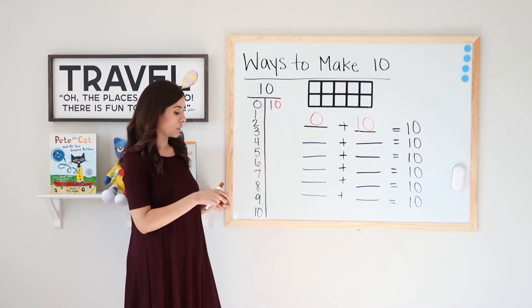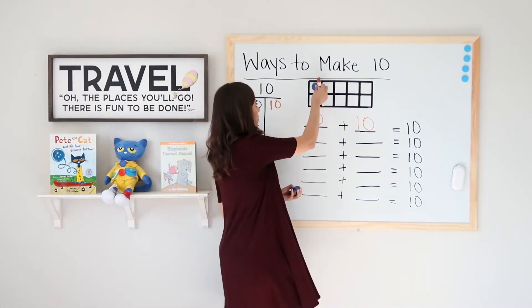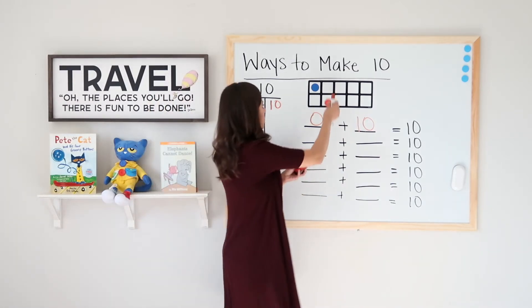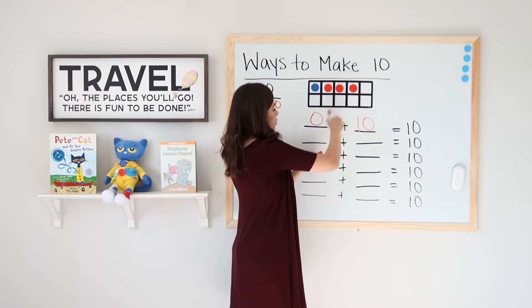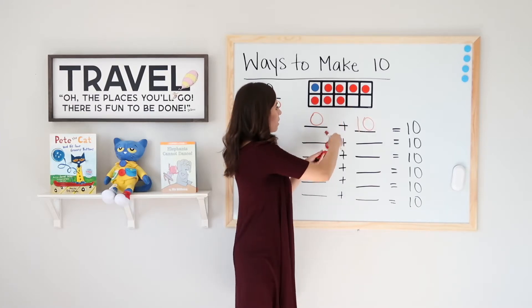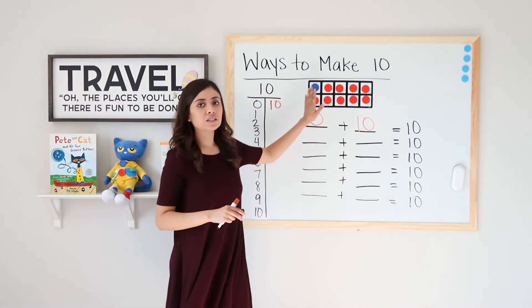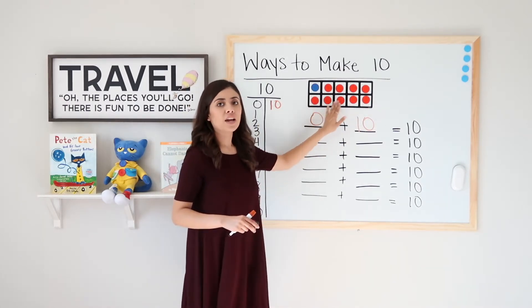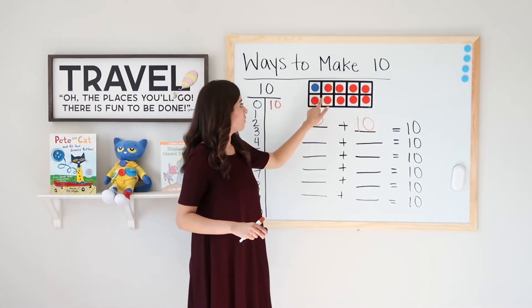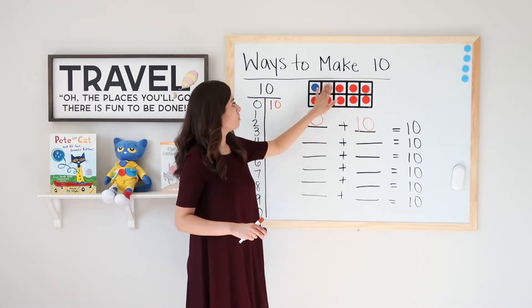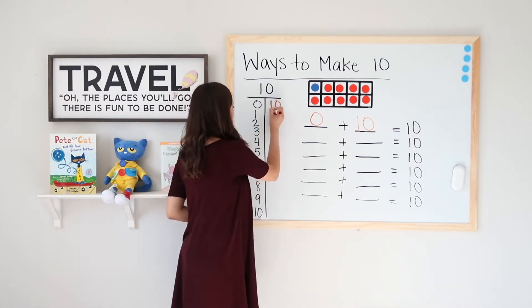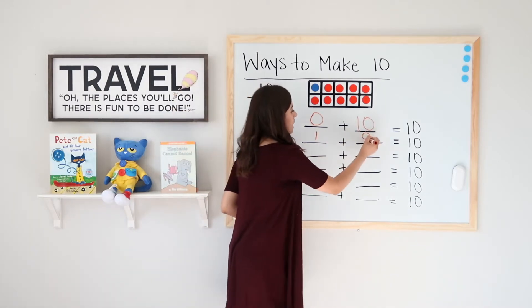Okay, so now 1. So I'm going to start with 1 blue dot and fill the rest of the squares in my 10 frame with red. I'm just filling it all up. I know that when I run out of squares, I've hit 10 already. So I have 10 dots total. One of those is blue. How many are red? Let's see. 1, 2, 3, 4, 5, 6, 7, 8, 9. 1 plus 9 equals 10.